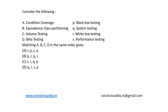Conditional coverage tests each boolean expression with values true and false. For this, the tester has to know the code, hence it is white box testing. So A is mapped to R. From this alone we can see that B, C, and D are directly eliminated — A is the correct answer.